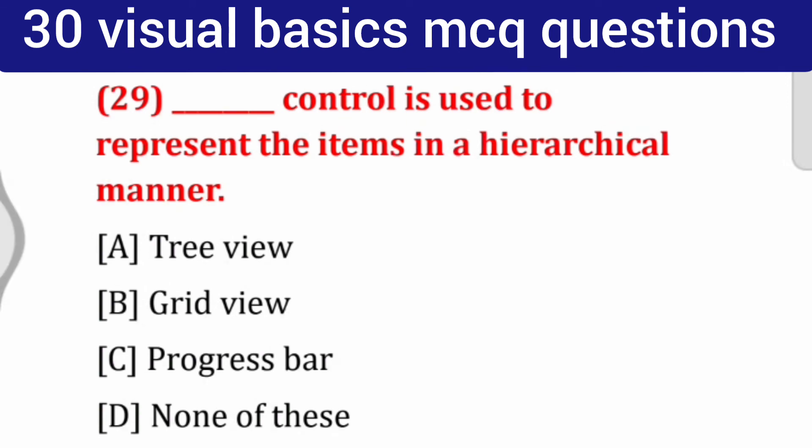Question number 29: ___ control is used to represent the items in a hierarchical manner. Options: tree view, grid view, progress bar, none of these. Correct answer: tree view.